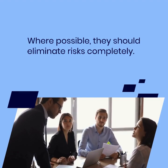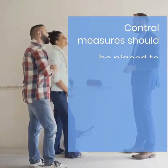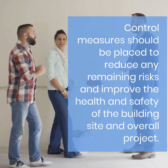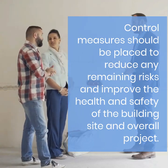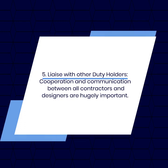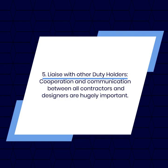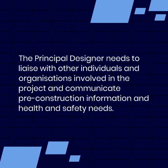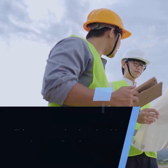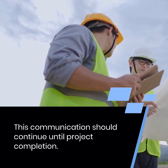Where possible, they should eliminate risks completely. Control measures should be placed to reduce any remaining risks and improve the health and safety of the building site and overall project. Fifth, Liaise with other duty holders: cooperation and communication between all contractors and designers are hugely important. The principal designer needs to liaise with other individuals and organizations involved in the project and communicate pre-construction information and health and safety needs. This communication should continue until project completion.